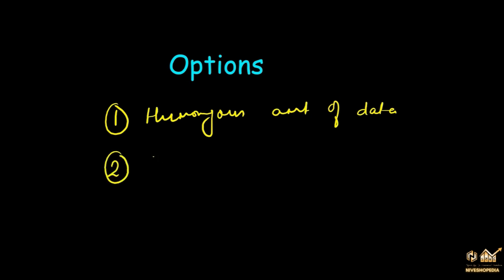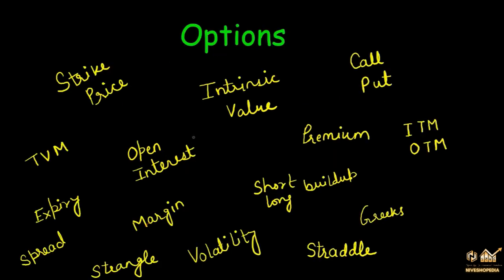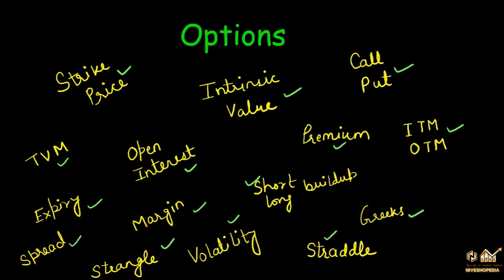The second reason is there are too many technical terms involved. What are those terms? There is strike price, intrinsic value, call option data, put option data, time value of money, open interest data, premium, in the money, out of the money options, short and long buildup, margin requirement, expiry, spread strategy, strangle, volatility, straddle, and then come the Greeks — delta, theta, and gamma. So all in all, there are so many technical terms that we get lost.